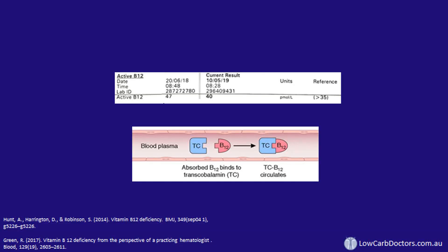Don't rely on serum B12. There's another test called active B12. B12 which is available for use by the cells of the body is bound to transcobalamin 2, forming a complex called holotranscobalamin 2. Because this binding makes B12 available for use by cells, it's considered the active form. Active B12 is thought to provide a much more accurate assessment of B12 status, but it still has limitations.